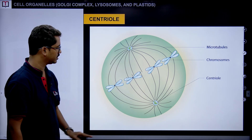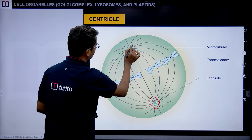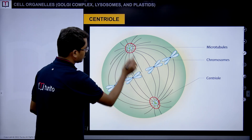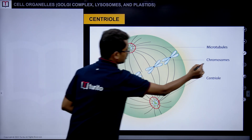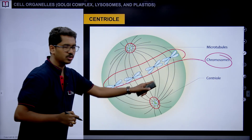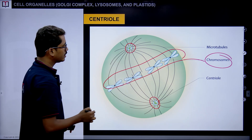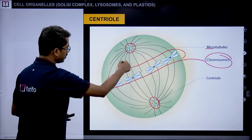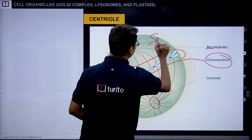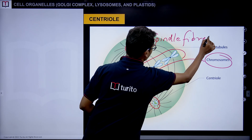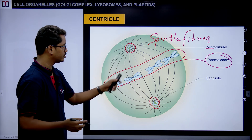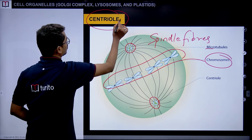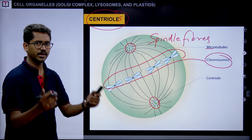During cell division, the two centrioles divide and move to different sides of the cell. As the chromosomes are arranged, these centrioles give rise to microtubules forming thread-like structures called spindle fibers. These spindle fibers are then used to pull the chromosomes apart. That is the role of the centrioles of the centrosome during cell division.